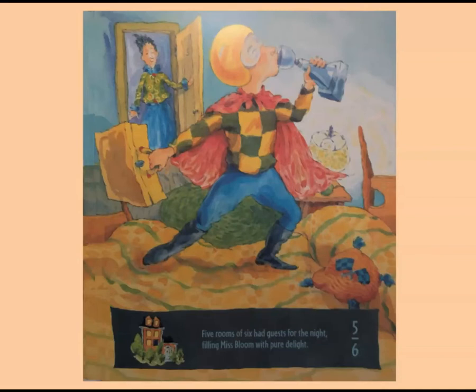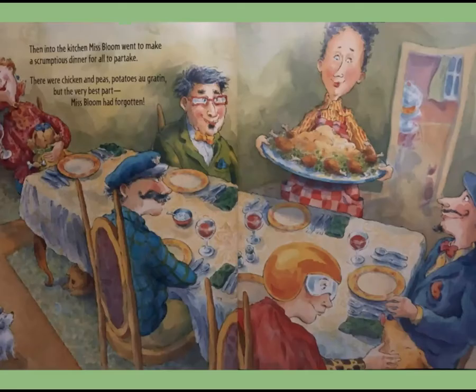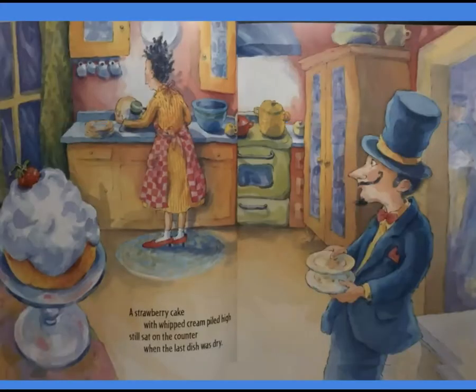Five rooms of six had guests for the night, filling Miss Bloom with pure delight. Then into the kitchen, Miss Bloom went to make a scrumptious dinner for all to partake. There were chicken and peas, potatoes of grout, but the very best part, Miss Bloom had forgotten. A strawberry cake with whipped cream piled high, still sat on the counter when the last dish was dry.